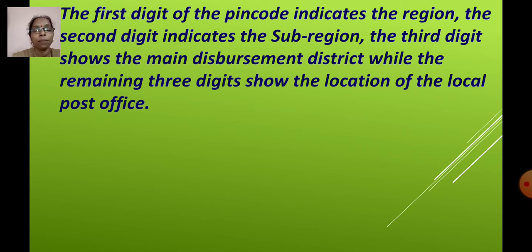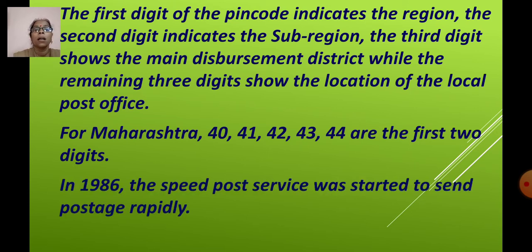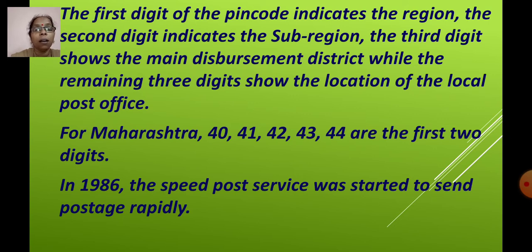For Maharashtra, 40, 41, 42, 43, and 44 are the first 2 digits of the PIN code. In 1986, the speed post service was started to send postage rapidly, making delivery faster than the regular postman dropping a letter.